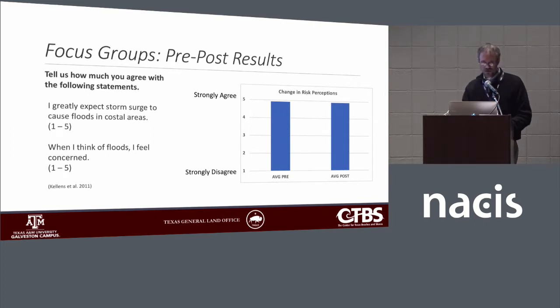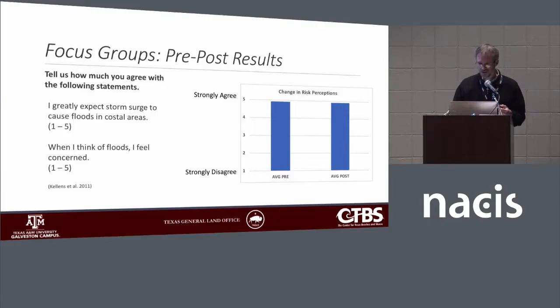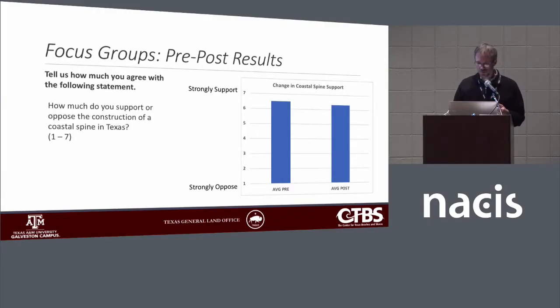Our pre-post results for risk perceptions and support for the spine showed not much movement. People came to the map pretty concerned about storm surge and left pretty concerned. Likewise in terms of support for the spine.